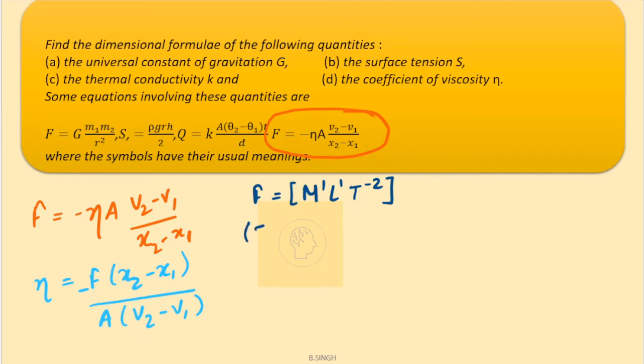x2 minus x1, that is the length difference. So, length difference is simply a length. The dimensions of length will be simply L1 and V2 minus V1, that is our velocity difference. So, velocity difference is simply L1 T minus 1 meter per second or whatever units we are following for the velocity difference.